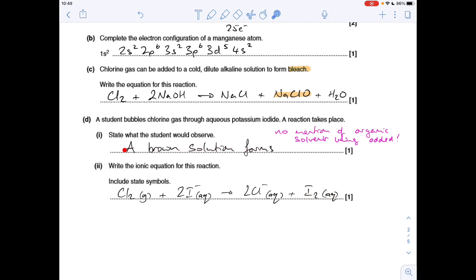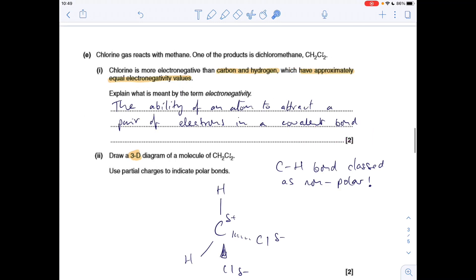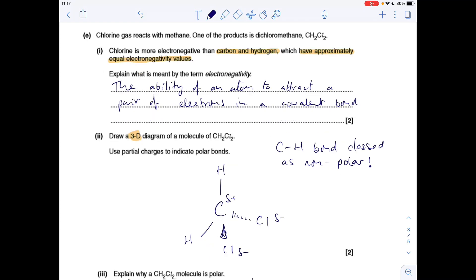Definition for electronegativity - the ability of an atom to attract a pair of electrons in a covalent bond. Next part, we've got to draw a 3D diagram of the molecule CH2Cl2 using partial charges to indicate polar bonds.